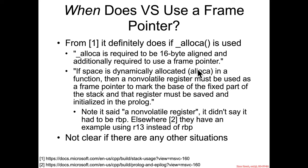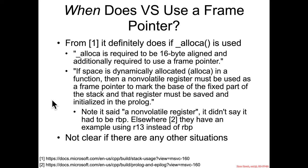alloca specifically allocates space on the stack rather than the heap. If space is dynamically allocated with alloca in a function, then a non-volatile register must be used as a frame pointer — and it doesn't have to be rbp. Their documentation shows examples using r13 instead. It's not currently clear from the docs whether Microsoft will use a frame pointer in any situation other than when alloca is in use, but if you know of such a case, let me know.